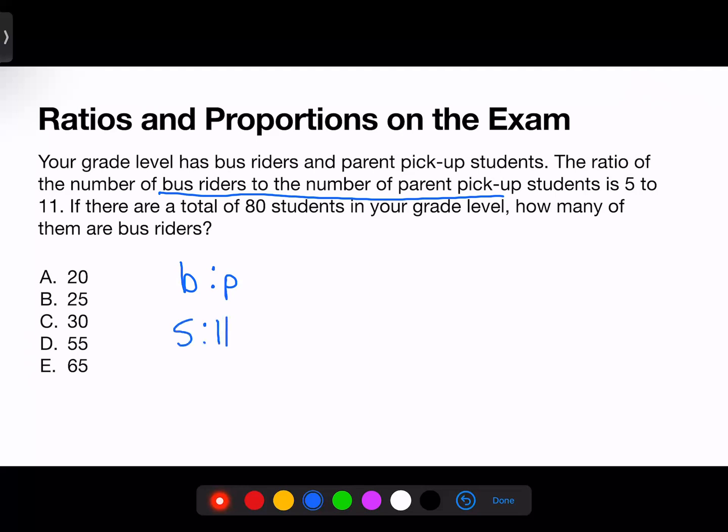The problem is only asking about bus riders. So let's figure out what percentage of students are bus riders. Out of 16 students, 5 of them are bus riders. We can rewrite this as 5 over 16. Now, once we have 5 over 16, we can set this to a proportion with 80 to determine how many bus riders would be found in this big of a group.